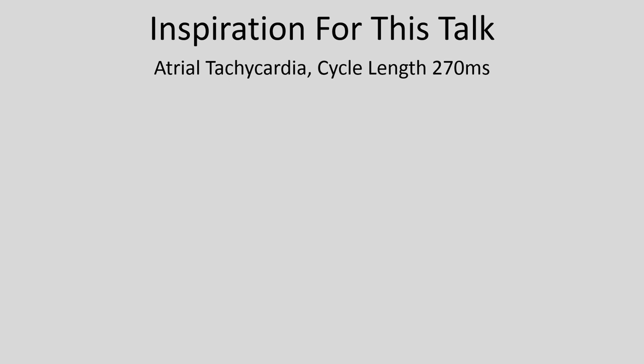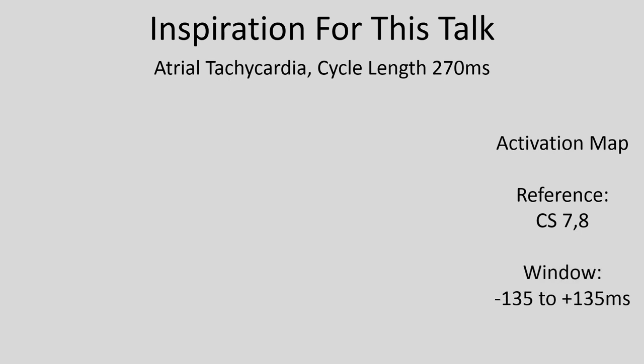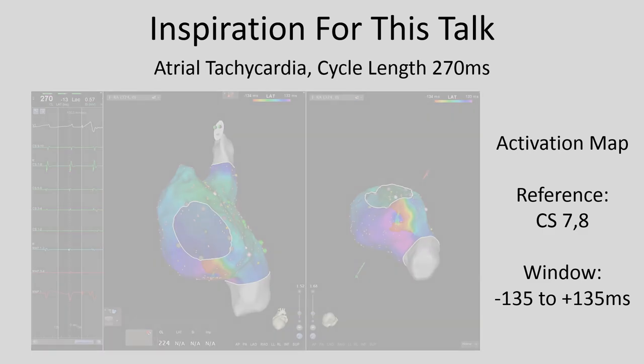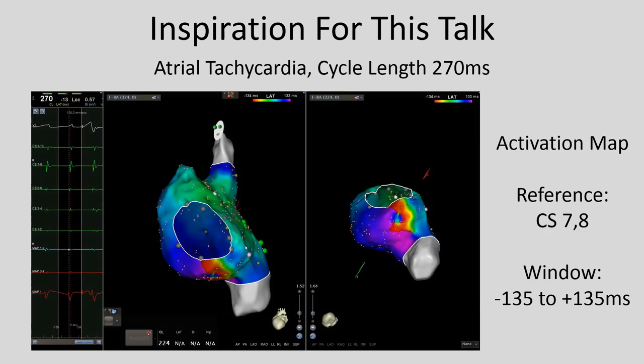This particular case was an atrial tachycardia with a cycle length of 270 milliseconds. We decided to create an activation map, and as is typical, we had a coronary sinus catheter in place and used the 7-8 pair of electrodes as our timing reference. We created a window of interest that spanned the reference electrode and covered the full cycle length of the tachycardia. Here is the map that was created.